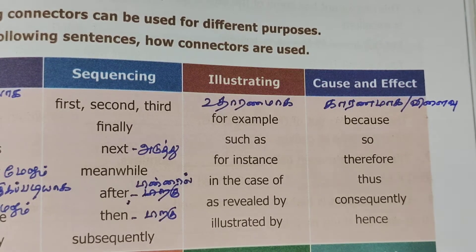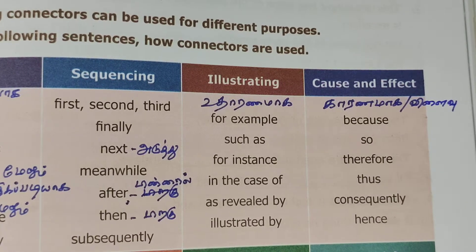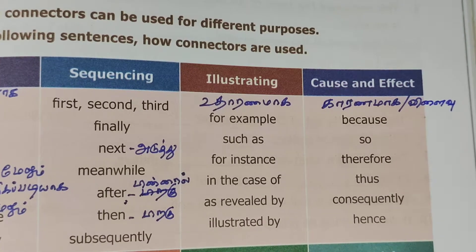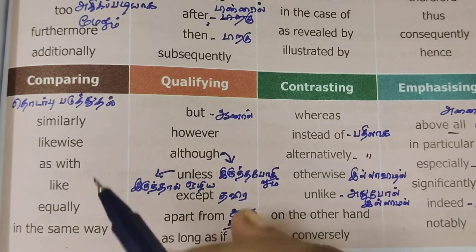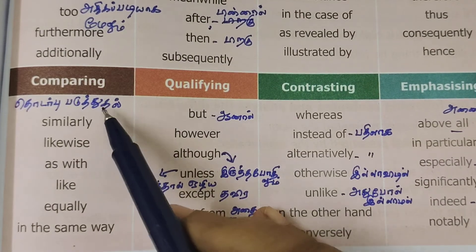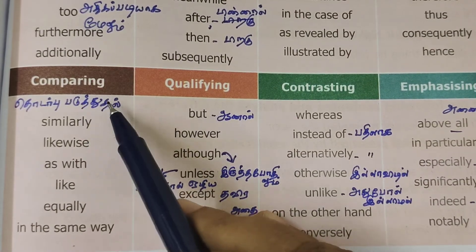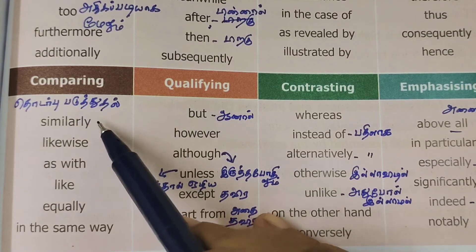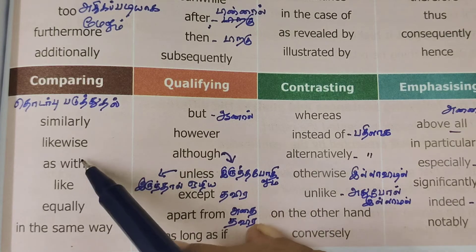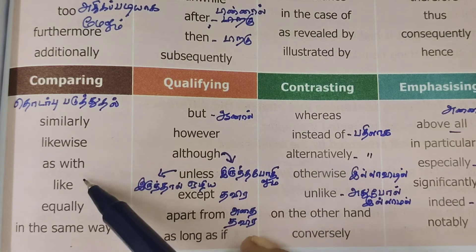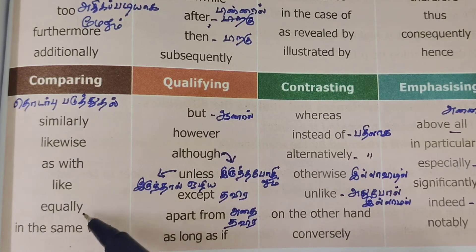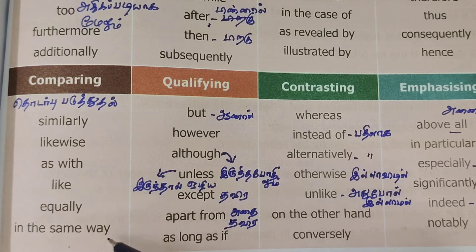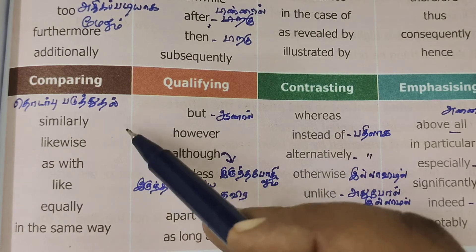Here we are giving examples. Let's take a look. Comparing — similarity connectors: likewise, as with, like, equally, in the same way. These are used to show similarity between two things.